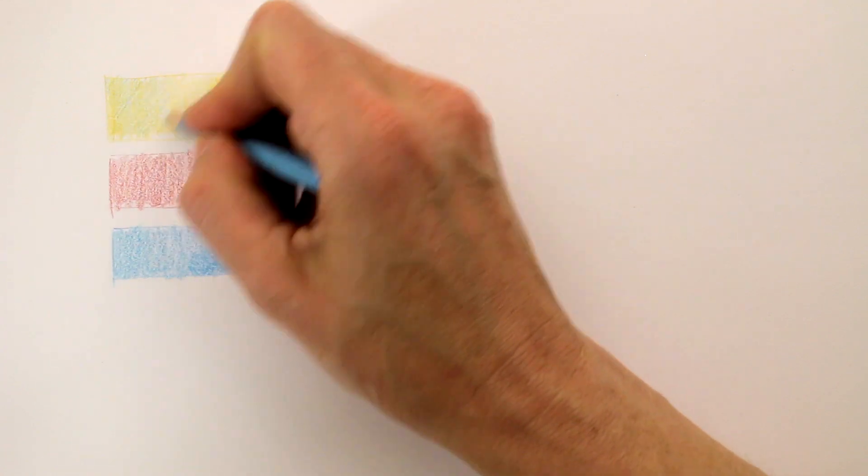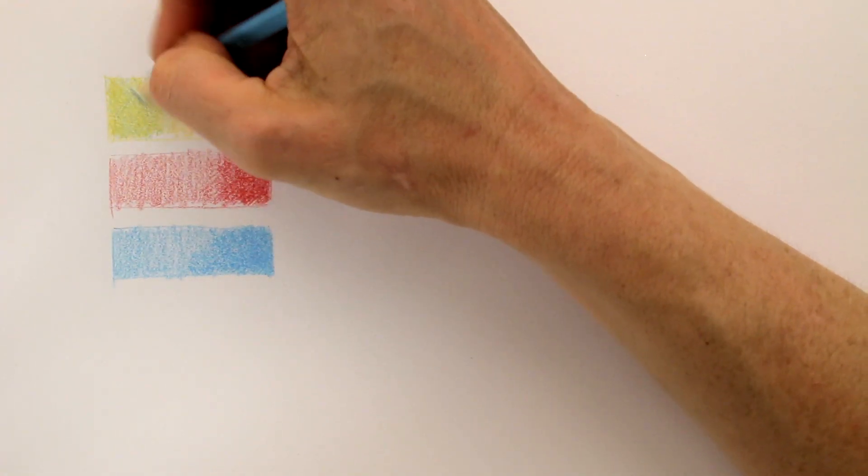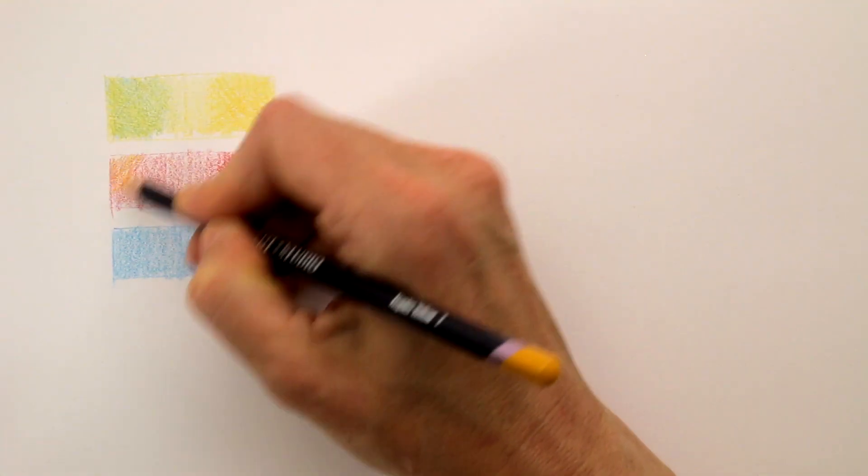If you want more saturation on the color, simply add another layer, and another layer. Use light hatching strokes in different directions, so you fill all angles of the tooth of the paper.